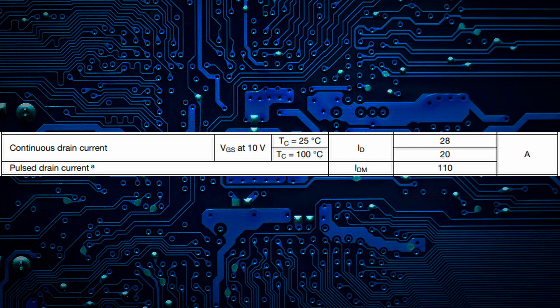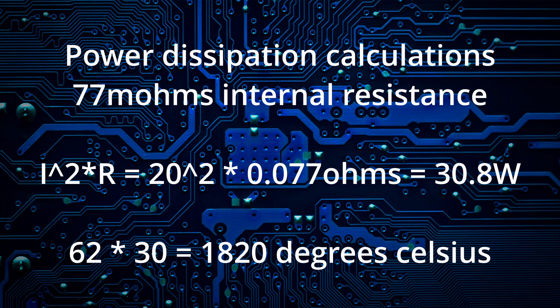What should we be careful about? We must consider the internal resistance, which is the next parameter. Internal resistance is the resistance value from drain to source given at a gate voltage. In this case, it specifies an internal resistance of 77mΩ with a gate voltage of 10V. What does internal resistance indicate? It indicates how much the transistor will heat up under certain current. Using Watt's law, we can determine the power dissipated as heat, which is current squared times resistance. If we had 20A and an internal resistance of 77mΩ, we get 30.8W.